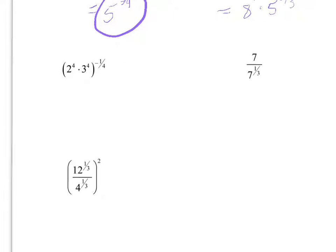On this next one, I'm going to distribute my 1 fourth to both of them. So it'll be 2 to the negative 4 fourths times 3 to the negative 4 fourths. 4 divided by 4 is 1, so it's 2 to the negative 1 times 3 to the negative 1. The negative exponent brings it down to the bottom. So it'll be 2 to the 1st times 3, the 1st on the bottom. And so it'll be 1 over 2 times 3 is 6, 1 sixth.